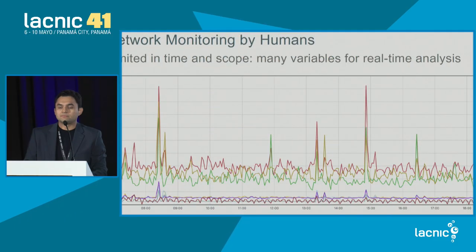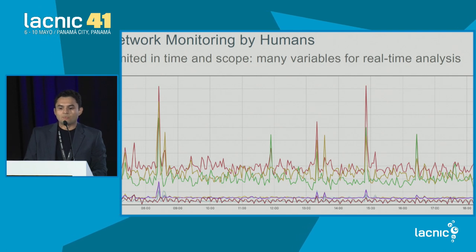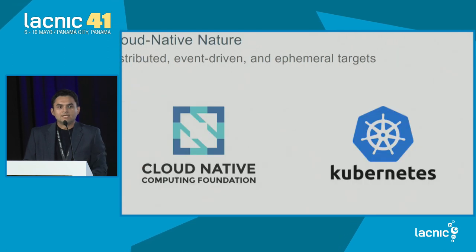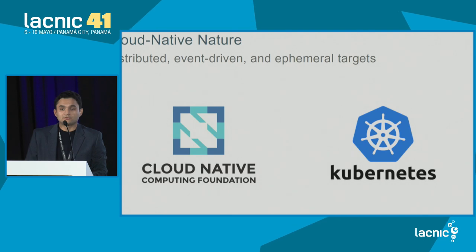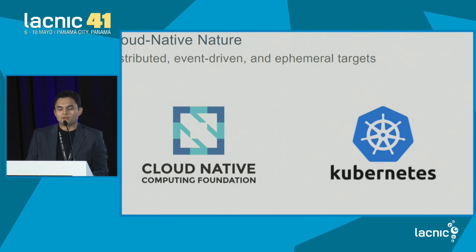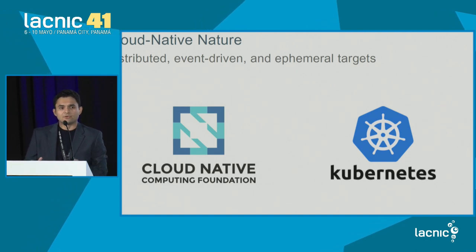Monitoring networks is not a very practical thing, because there are many variables that you should analyze in real time, so it's limited both in time and scope. As shown in the graph, there are multiple variables. And when working with Kubernetes infrastructure, we are no longer working with fixed machines, but with ephemeral machines that are created and destroyed. This is event-based.